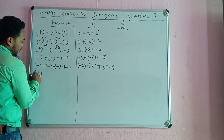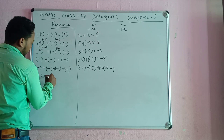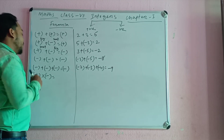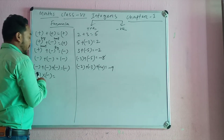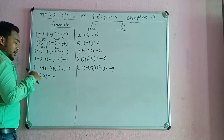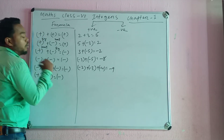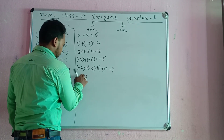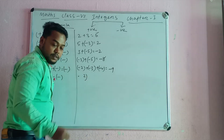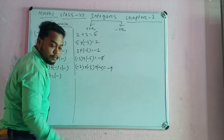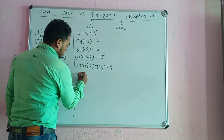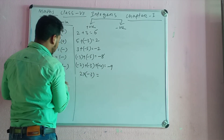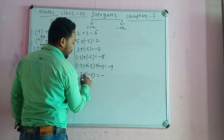Plus into minus. So if you have plus into minus, then minus. I am going to take a look at the positive integer with the negative integer, which we will multiply. Here we will see the example. I am going to take a look at 2 into minus 3.